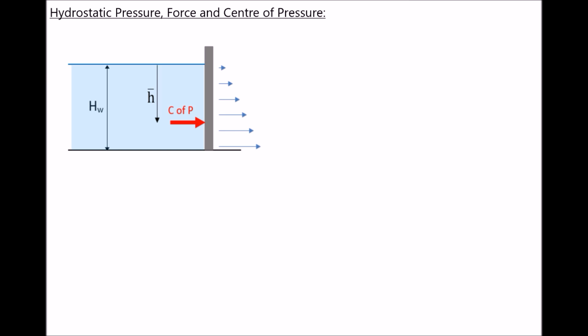To begin with we have a relatively simple example where we have a retaining wall, and that retaining wall is retaining water on the left hand side. We have the height of the water labelled h subscript w, and we also have an indication of the location of center of pressure, which is a distance h bar below the free surface of the liquid.